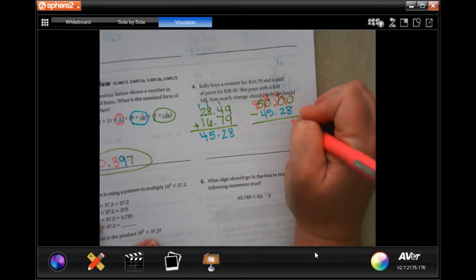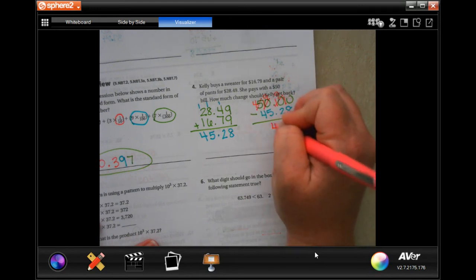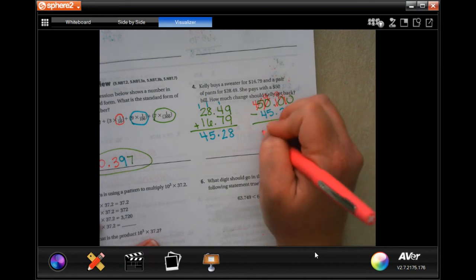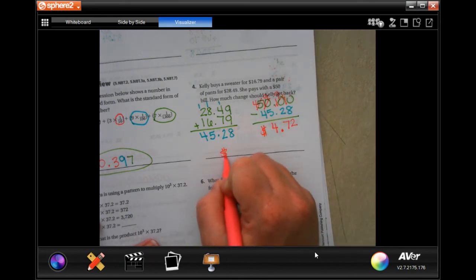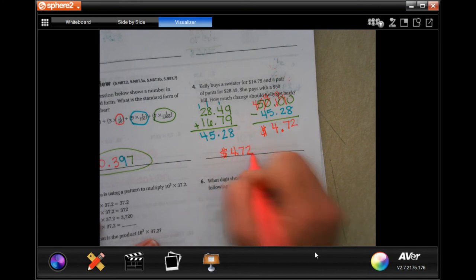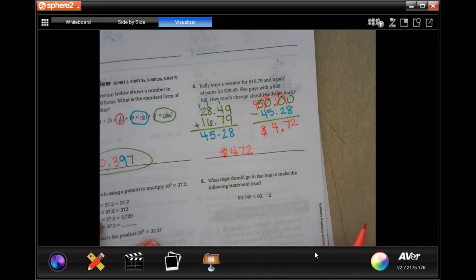Now I'm done borrowing. Ten minus eight is two, nine minus two is seven, nine minus five is four, and four minus four is nothing, so drop your decimal down. She'll get $4.72 in change.